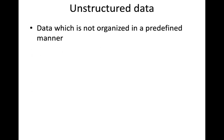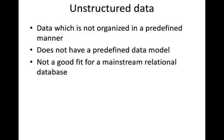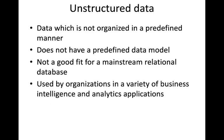The third kind of data is unstructured data — data which is not organized in a predefined manner and does not have any predefined data model. It is not a good fit for mainstream relational databases; we cannot store this kind of data in a relational database at all. It is used by organizations in a variety of business intelligence and analytical applications. Examples include Word documents, PDF files, text files, and multimedia such as audio files.